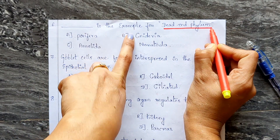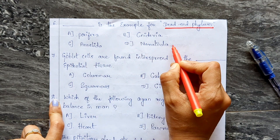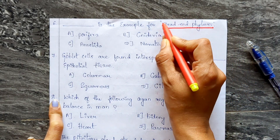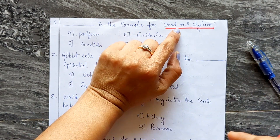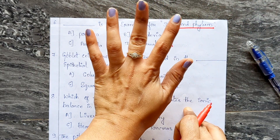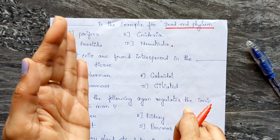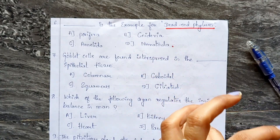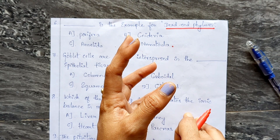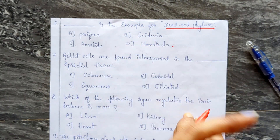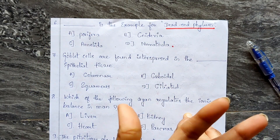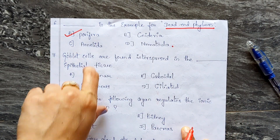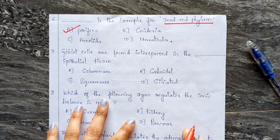The sixth question: which is an example of a dead-end phylum? Options: A) Porifera, B) Cnidaria, C) Annelida, D) Nematoda. A dead-end phylum is one that has not given rise to any other group of organisms during evolution — it stopped there. That phylum is Porifera. Porifera has not given rise to any other group, and notably, nerve cells are absent in Porifera. The correct answer is A.